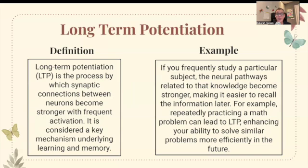Long-term potentiation, often referred to as LTP, is the process by which synaptic connections between neurons become stronger with frequent activation. It's considered a key mechanism underlying learning and memory — we talked about LTP in unit one when we discussed neurons. For example, repeatedly practicing a math problem can lead to long-term potentiation, enhancing your ability to solve similar problems more efficiently. The more you practice your key terms, the stronger those neural connections become.